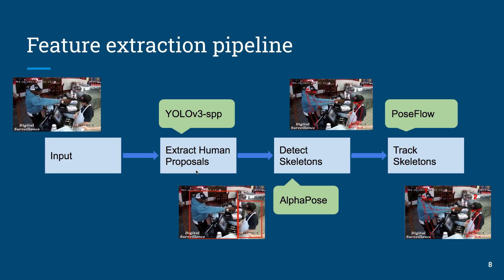To prepare videos from HR-Crime for skeleton-based anomaly detection, we follow this pipeline. The video images are first fed into the object detector, which returns the bounding boxes of human proposals. Based on previous work, we used a spatial pyramid pooling-based version of YOLO3. We then extracted skeletons from the human proposals using AlphaPose, which returns 17 key points per skeleton representing different body part locations. And finally, to track skeletons, we applied PoseFlow.